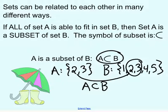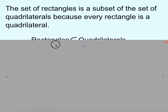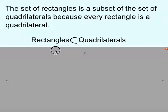We can also think about things like rectangles and quadrilaterals. The set of rectangles is a subset of quadrilaterals because every rectangle is a quadrilateral. We have lots of other quadrilaterals, but inside this idea of quadrilaterals we have all of my rectangles. So rectangles are a subset of quadrilaterals — basically, can I fit all of rectangles into quadrilaterals? Yes, I can.